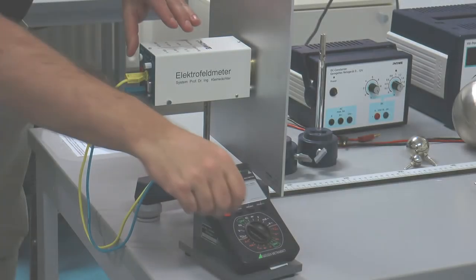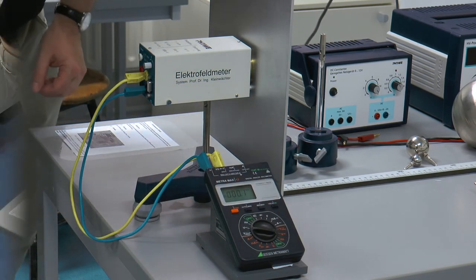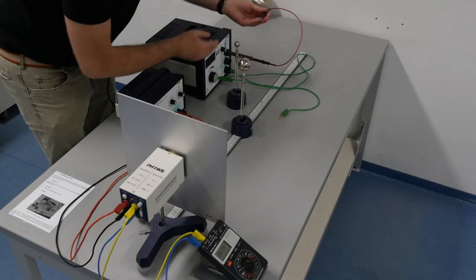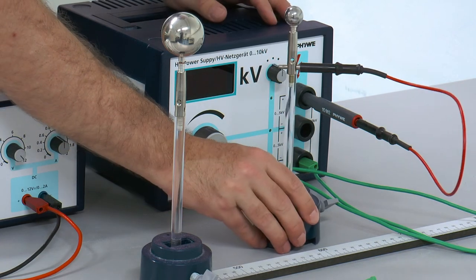The sockets on the back of the electric field meter are connected to the voltmeter. The small or medium sphere is placed on an insulating pedestal to charge the respective other sphere and connected to the high voltage power supply via the protective resistor.